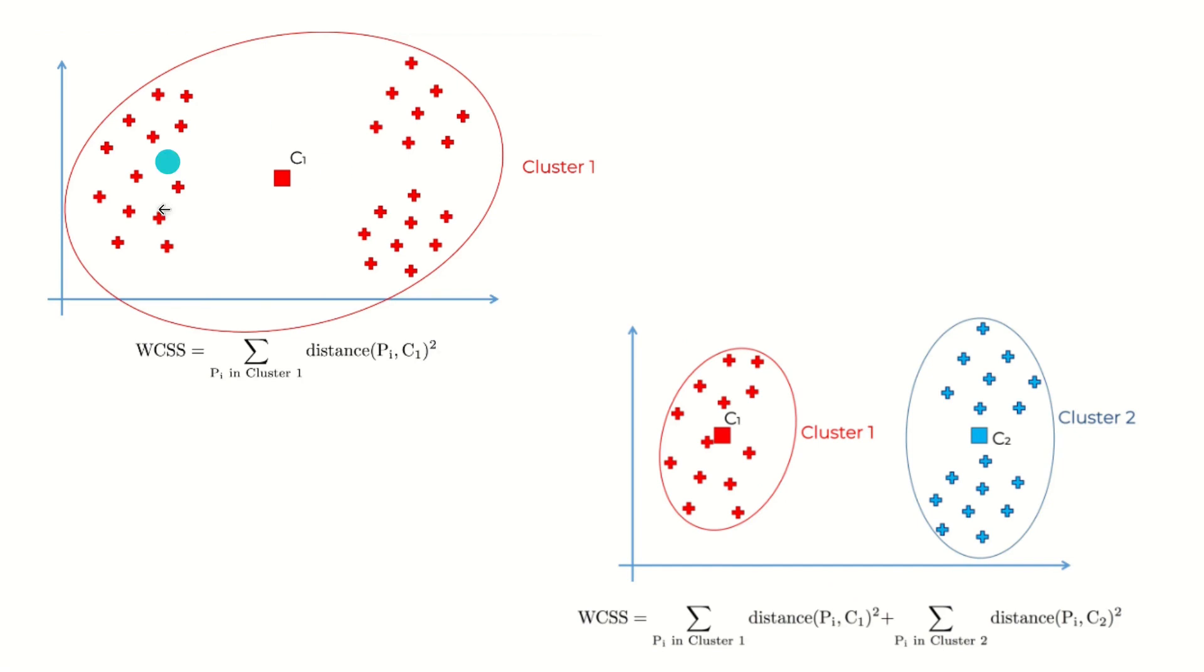The simple thing is: if you have a single cluster, the WCSS value will be high. If you keep increasing the number of clusters, the WCSS value will keep decreasing.